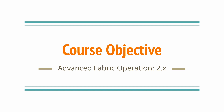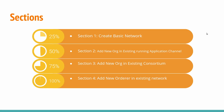We will be covering all the necessary steps in this course. On the screen you can see there are a total of four major sections available in the course. The first section will cover how to create a basic network, so that on top of this basic network we will be doing operations like adding a new organization in the existing running network, adding a new organization in the existing consortium, and finally adding a new orderer in the existing network. Section 1 will be dedicated to creating the basic network, and once we are done with that we can start with Section 2.